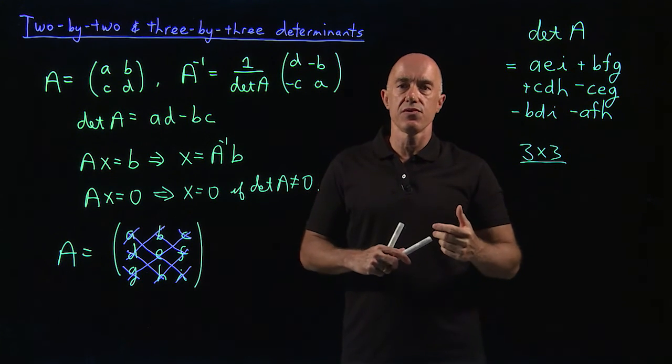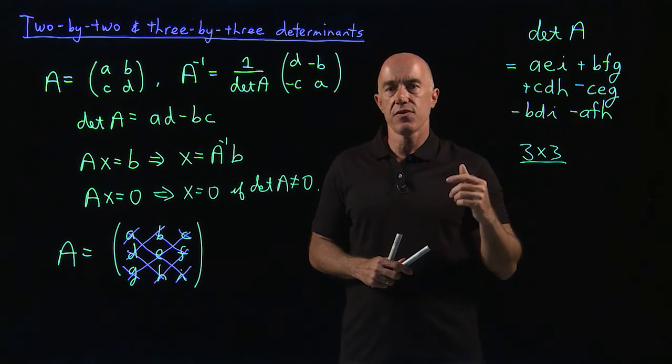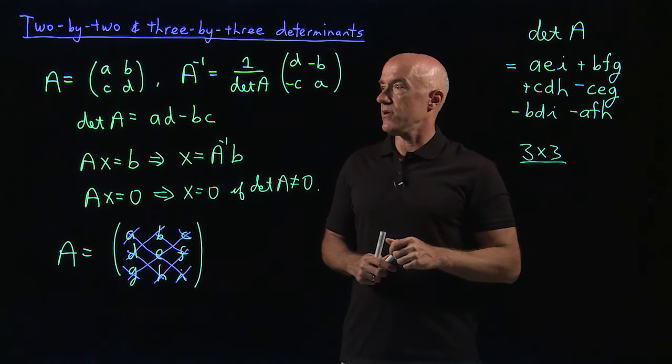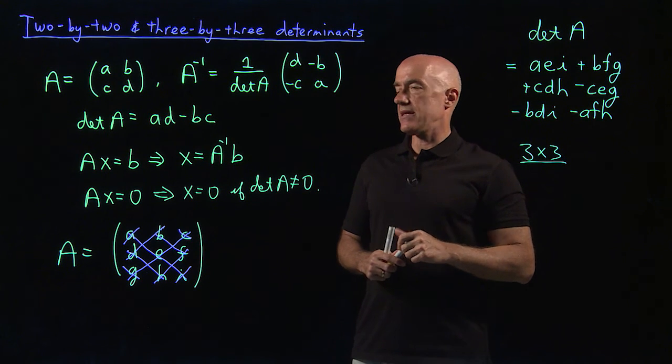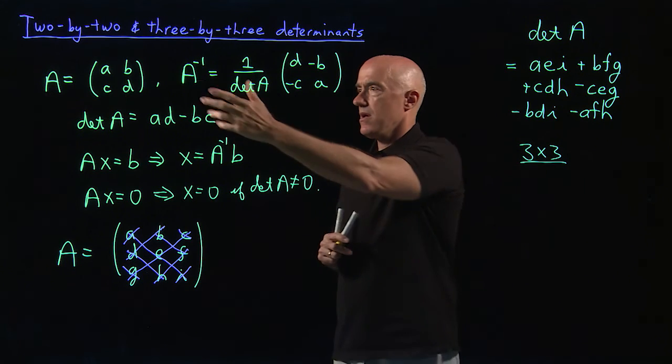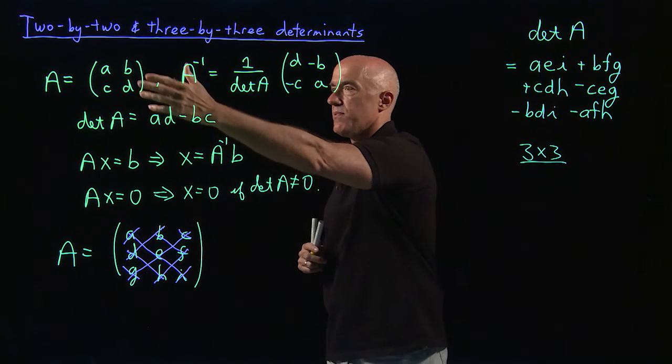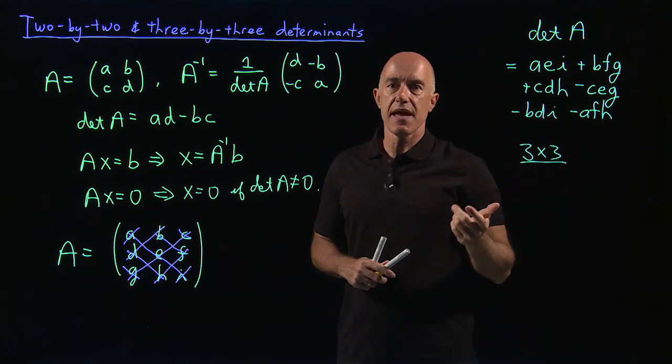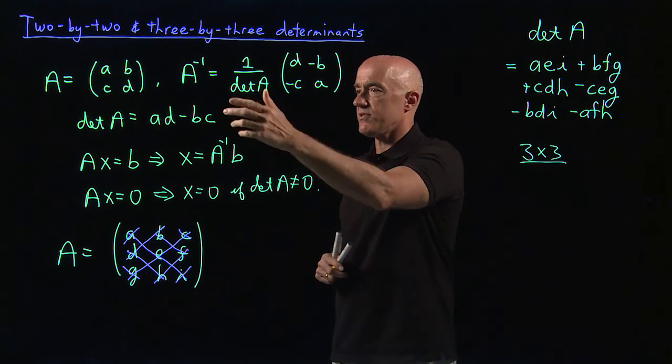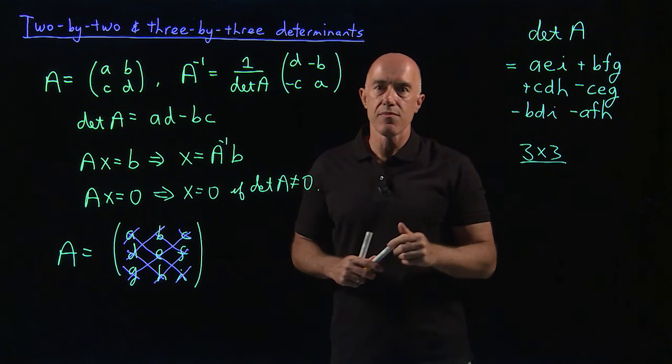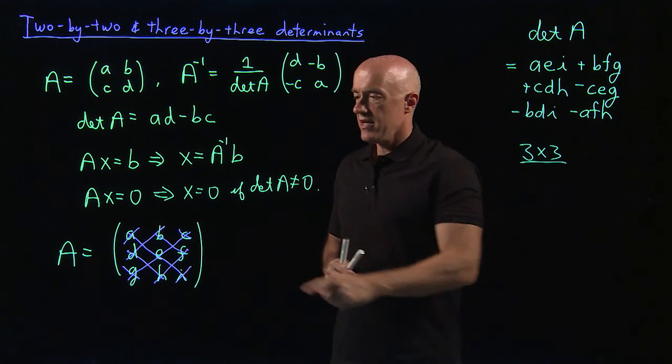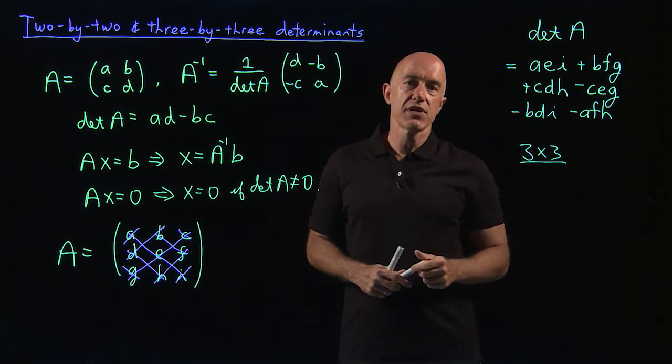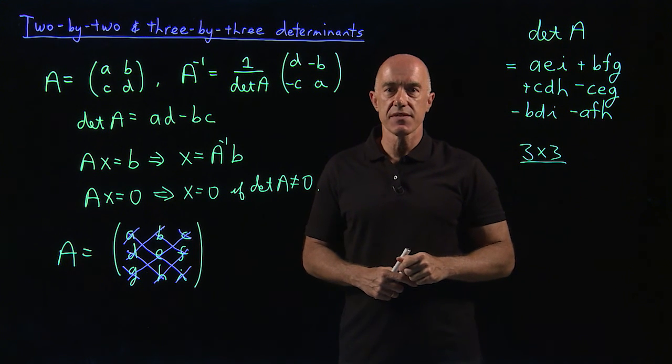So what we're going to want to do then is to generalize this to n by n matrices. And we will do that in the next video. So mainly the thing to remember here is the two by two determinant is very simple, A, D minus B, C. And the three by three determinant isn't that much harder. There are six terms instead of two. But it's very easy to remember what those six terms are if you remember that you just draw these diagonals. I'm Jeff Chasnoff. Thanks for watching and I'll see you in the next video.